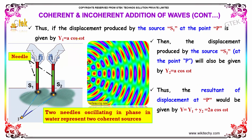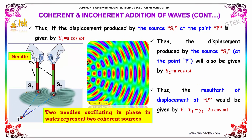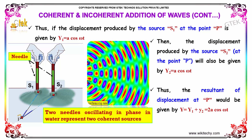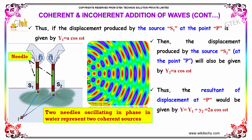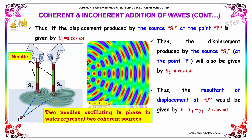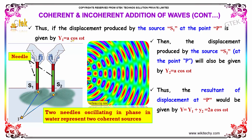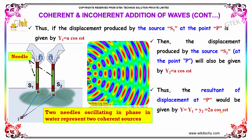If the displacement produced by source S1 at the point P is given by Y1 = A cos(ωt), then the displacement produced by S2 will also be given by Y2 = A cos(ωt). So the resultant displacement, adding these two, gives Y1 + Y2 = 2A cos(ωt).